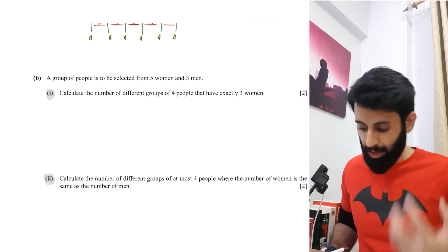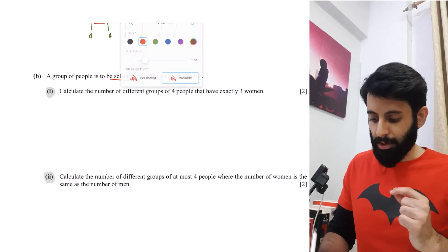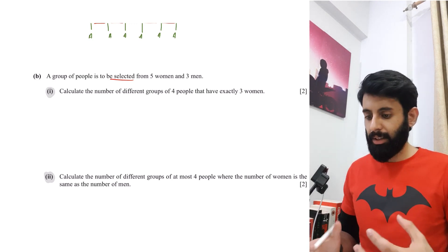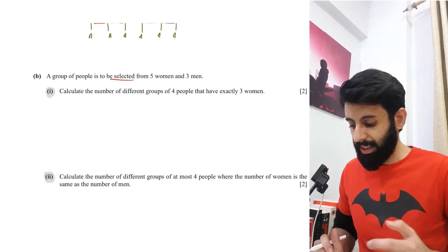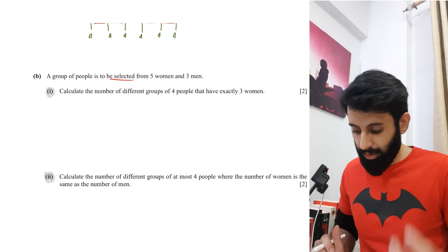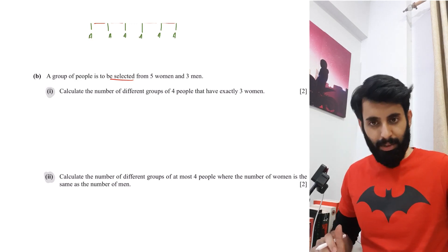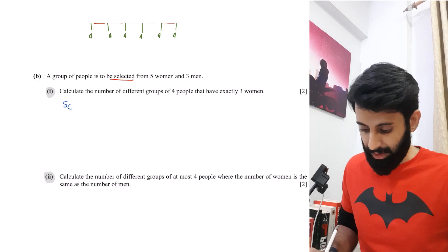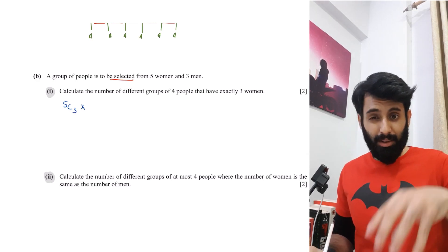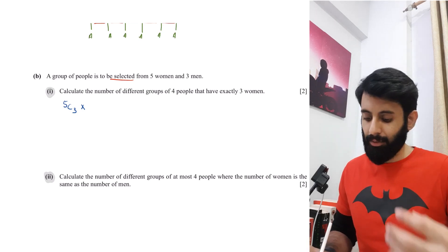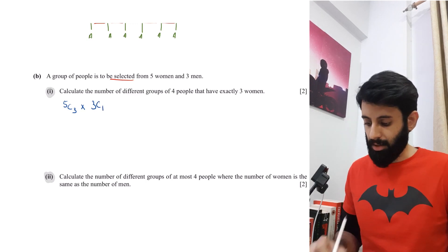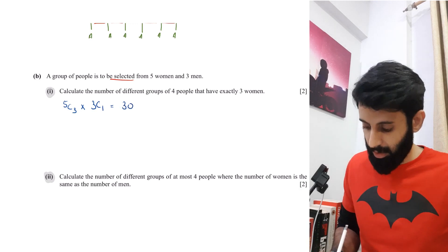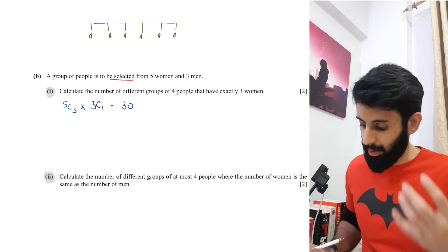Then we talk about part B, which says a group of people is to be selected — so instantly we know we're dealing with combinations, since order doesn't matter when selecting people. Calculate the number of different groups of four people that have exactly three women. We have five women to choose from and we want exactly three, so that's 5C3. The one remaining place must be filled by a man, and we have three to choose from, so that's 3C1. Therefore 5C3 times 3C1 equals 30 different groups.